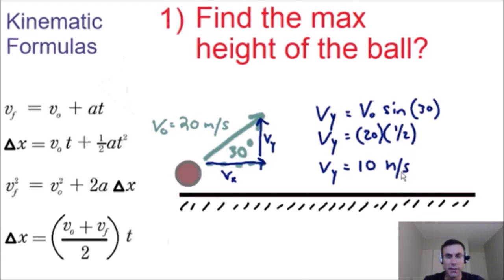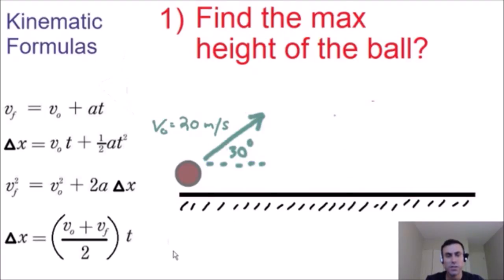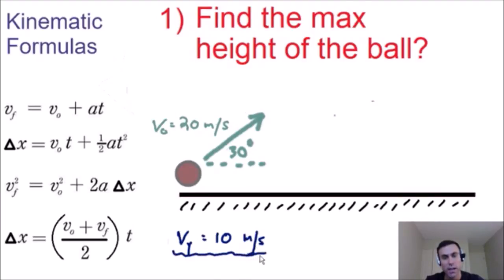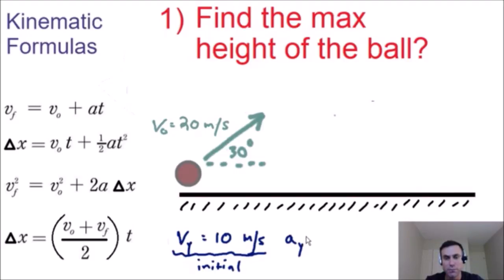Our initial velocity in the y direction is equal to 10 meters per second. The acceleration in the y direction is the acceleration due to gravity — I'll round it to negative 10 meters per second squared to make calculations easier. It's negative because it acts in the opposite direction of our upward velocity.